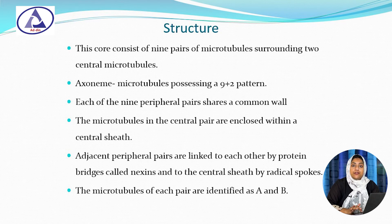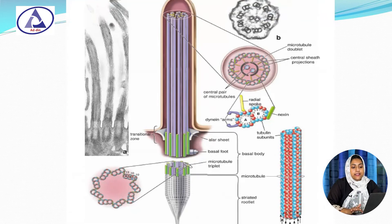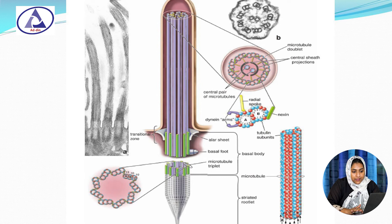The microtubules of each pair are identified as A and B. These figures show the structure of the cilia axoneme pattern. This is the peripheral microtubule pair — 9 pairs — and this is the central pair, surrounded by the central sheath. It is connected to the peripheral pair by radial spokes, and in the peripheral pair there is a presence of protein.